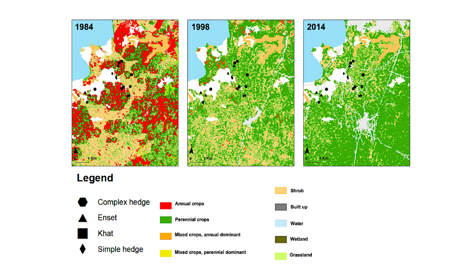The results of the landscape analysis indicated that the landscape in the study area changed from maize-dominated to more small-scale and fragmented agroecosystems with a higher proportion of perennial crops.